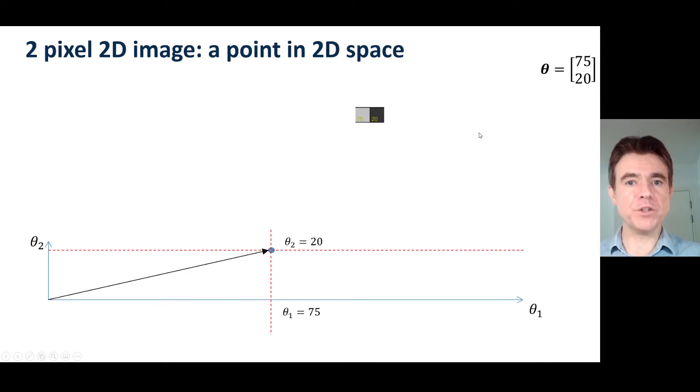Therefore what I can do is consider a 2-dimensional vector space where I've got the value of element 1, so theta 1, along this axis. So I need to go along to a position of theta 1 equal to 75 on this axis. And then on the second axis I've got the second element of theta, so that's element theta 2 and I've got to go to position 20 along that axis.